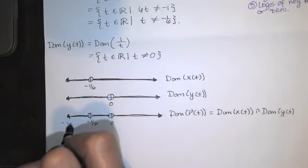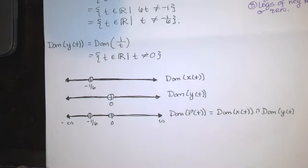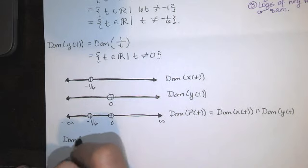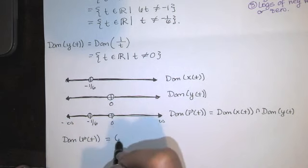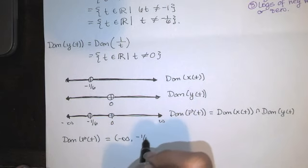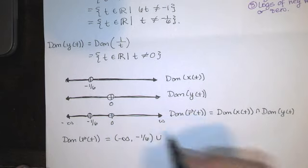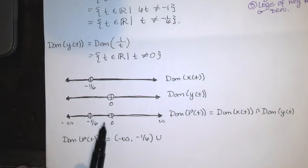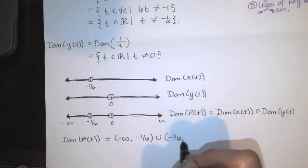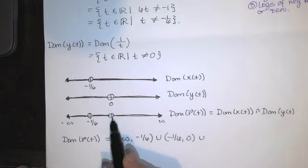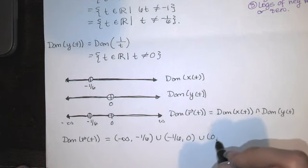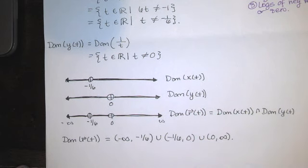In interval notation, reading from left to right, the domain of r(t) is the interval from negative infinity to -1/6, union the interval from -1/6 to 0, union the interval from 0 to infinity. And that's the domain.